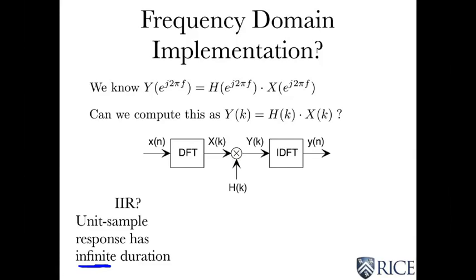I need a finite duration sample, so I can't even compute this as a Fourier transform. I can sample the formula for the transfer function, which can be derived from the difference equation, to get an H of K.